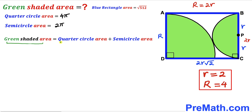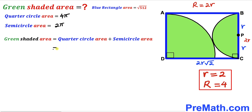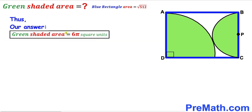Here's our final step. The area of the green shaded region equals the quarter circle area plus the semicircle area: 4π + 2π = 6π square units. The area of the green shaded region is 6π square units. Thanks for watching, and please don't forget to subscribe to my channel for more exciting videos!